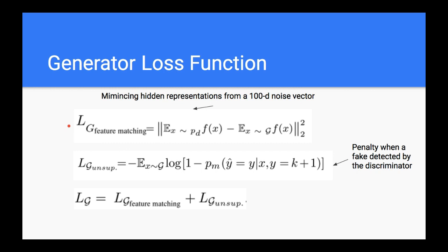Also, if the generator produces a fake example that is detected by the discriminator — meaning the discriminator successfully classifies it as the fake class — the generator is penalized. You don't want this to happen, so you want to minimize the probability of fake examples being detected. In the loss function, there is a negative sign for this term. The final generator loss sums up these two terms: the feature matching term and the unsupervised term.